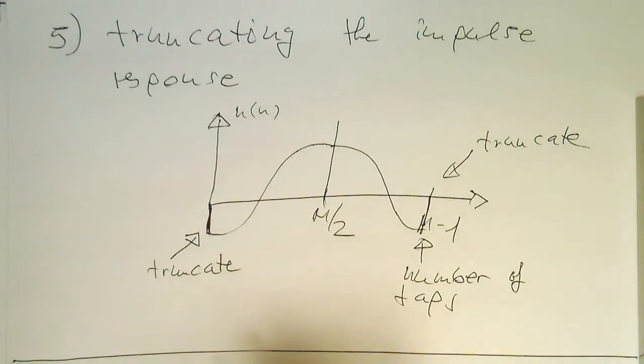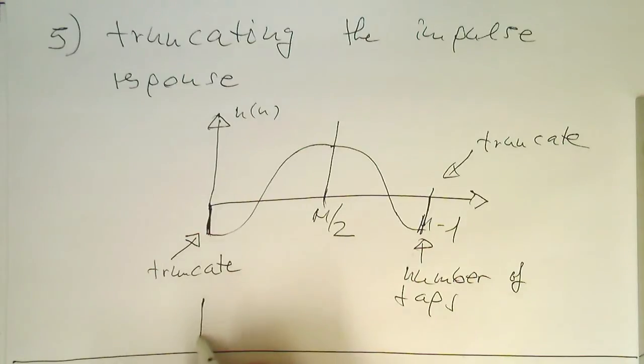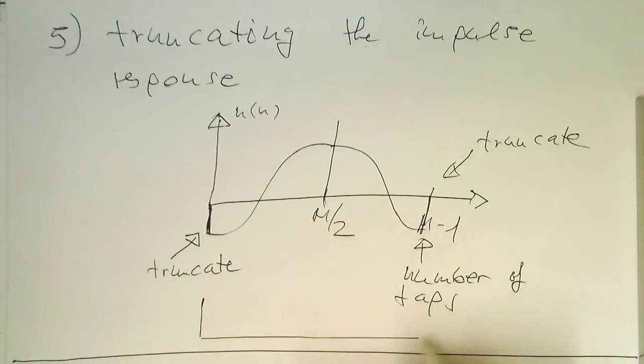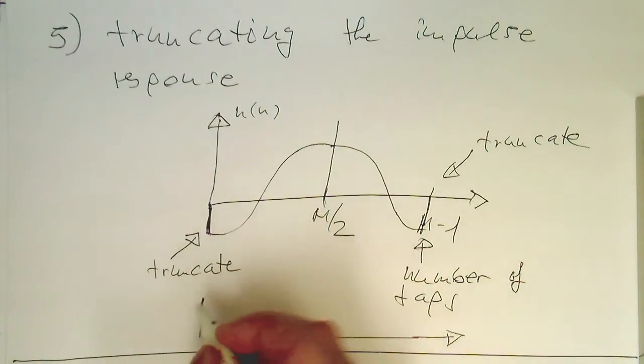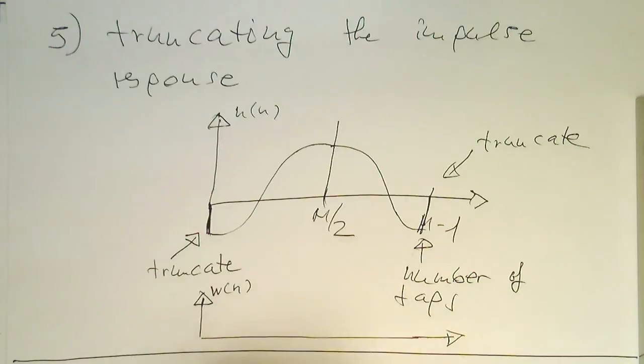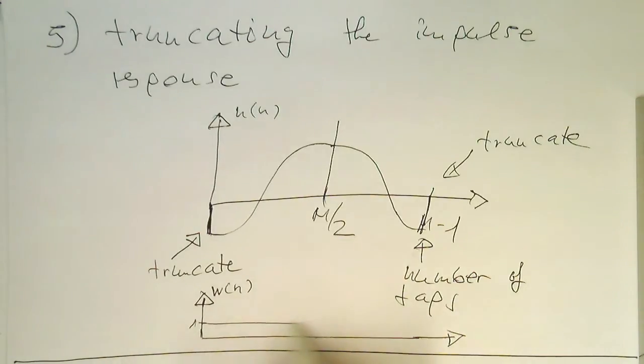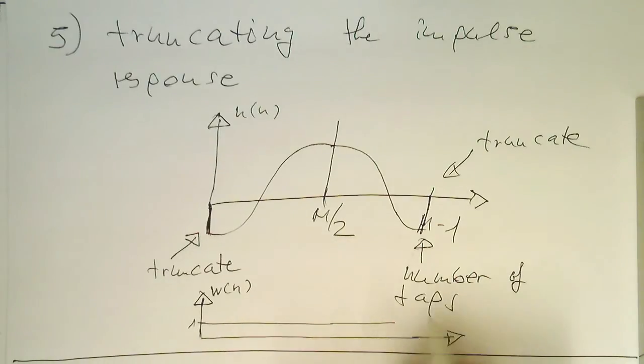We could understand this truncating in a different way, and that's usually the way this method is called. We define a function W(n), and this function in this case has its value 1 here, running up to M minus 1.